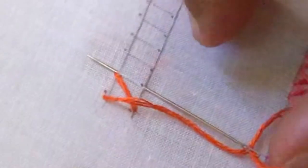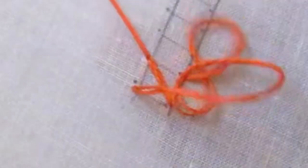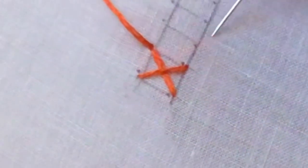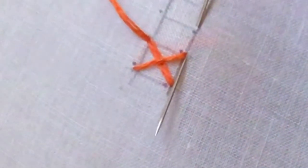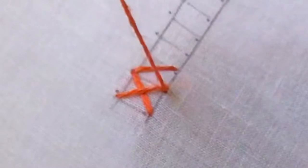Coming to the next stitch, insert the needle in one corner and take it on the previous corner in a straight line. Now you have got one cross.